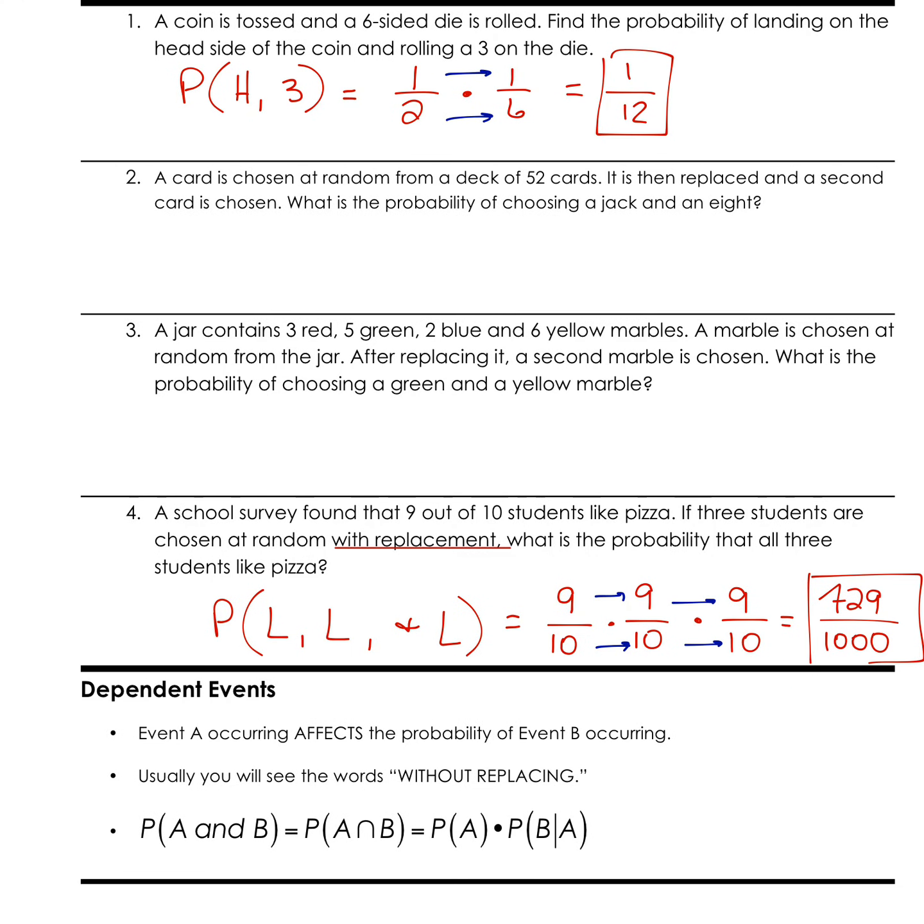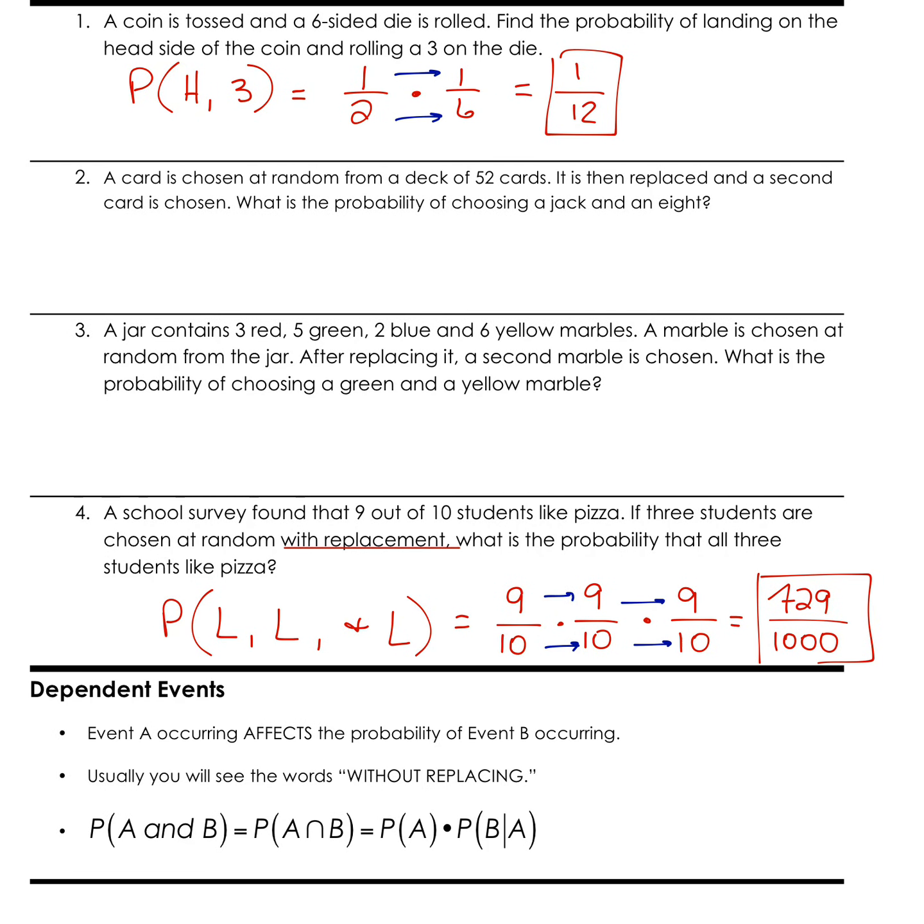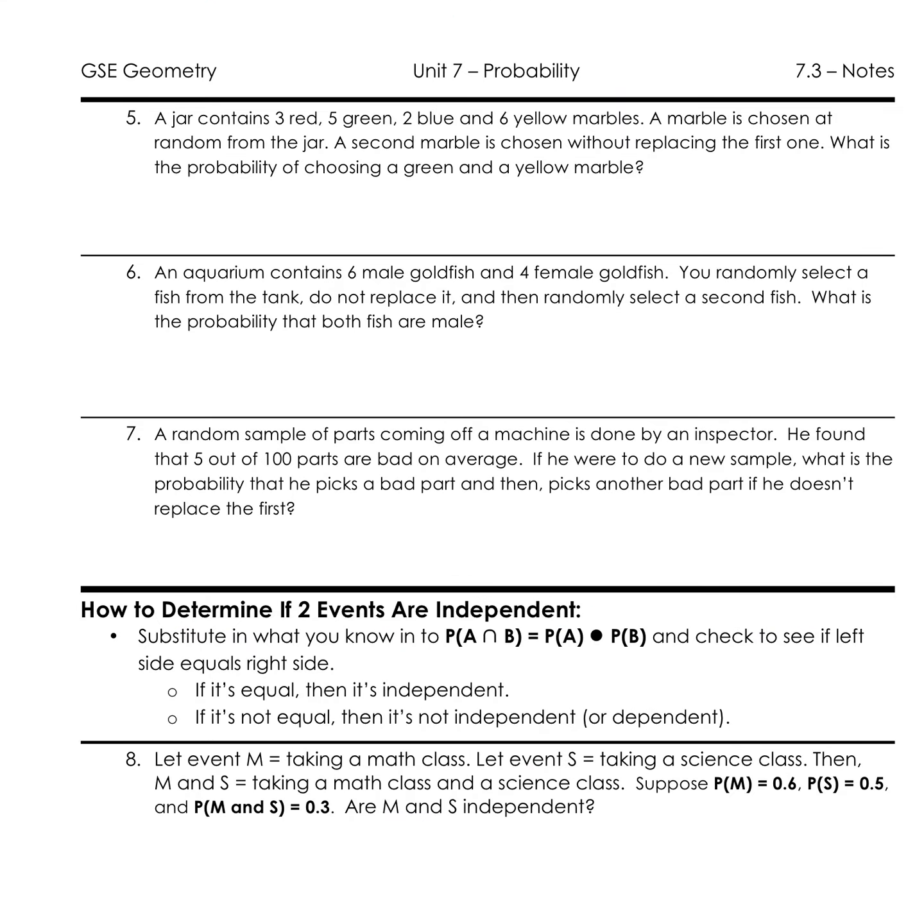Those are our independent events. Remember, independent, the outcome of the first does not affect the outcome of our second. Now, when we talk about dependent events, the outcome of A will affect the outcome of B. Our key words here are without replacement. If I see without replacement, I know that I need to address it, because it's not going to allow me to continue.